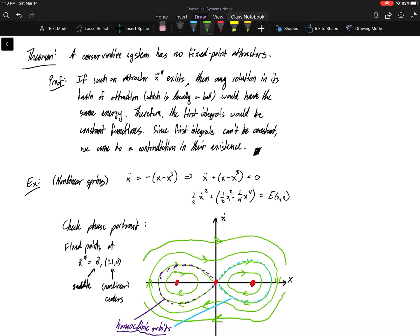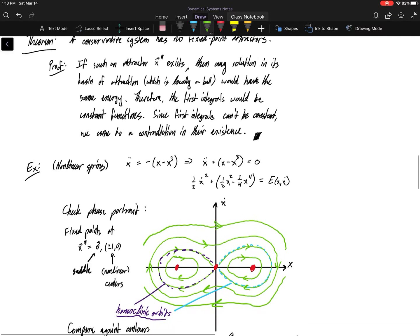So that means we rule out fixed point attractors and repellers. So that means the only things that we can really do in these 2D systems, as far as fixed points are concerned, is be a saddle or be a linear center. And that's the only thing that we can really do.